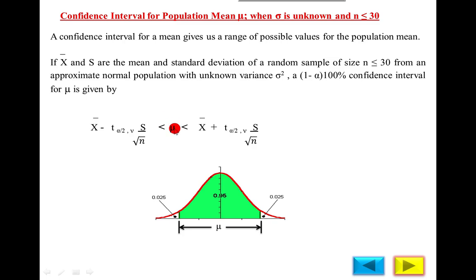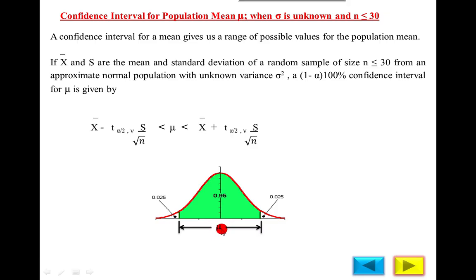μ is the parametric value. Parameter means population value — population mean, population standard deviation, etc. are called parameters. And x-bar (sample mean) and sample standard deviation are called statistics. In confidence interval, we find the lower and upper value of the population mean. In testing of hypothesis, we test either the population mean is true or false with the help of sample statistic — sample mean, sample data.